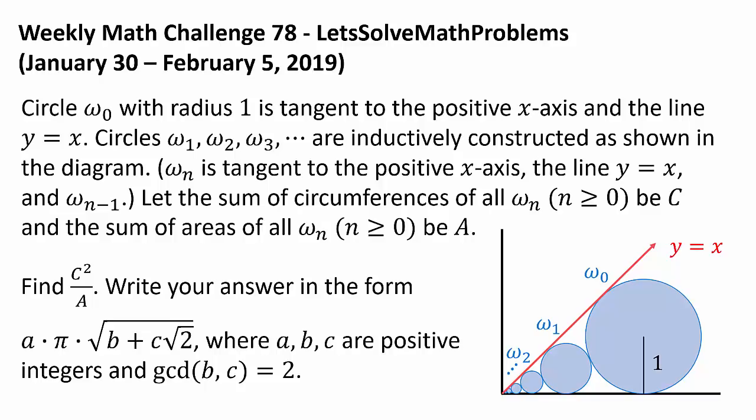Let the sum of circumferences of all omega-sub-n be C and the sum of areas of all omega-sub-n be A. Find C squared divided by A.